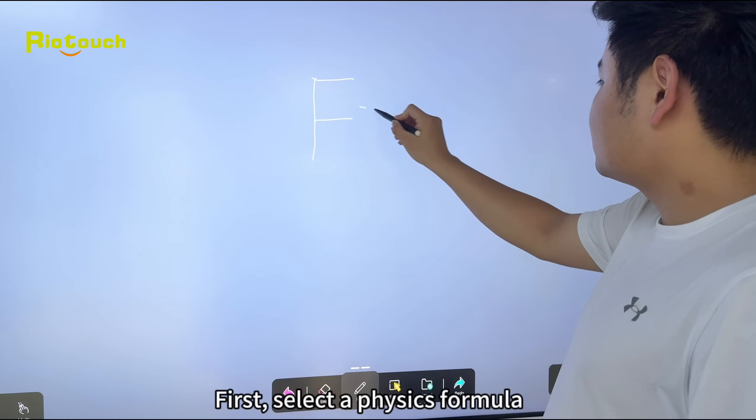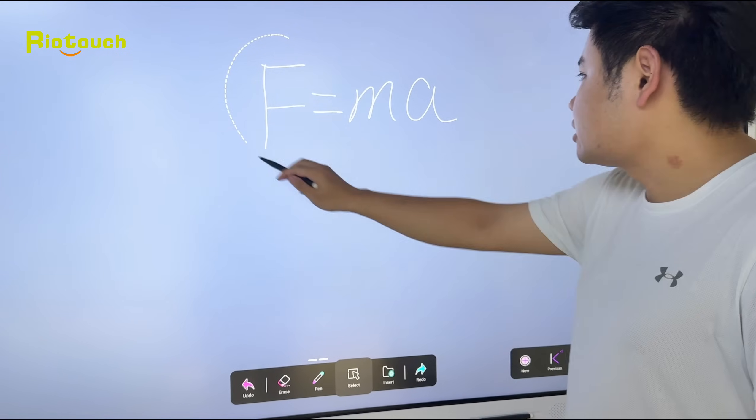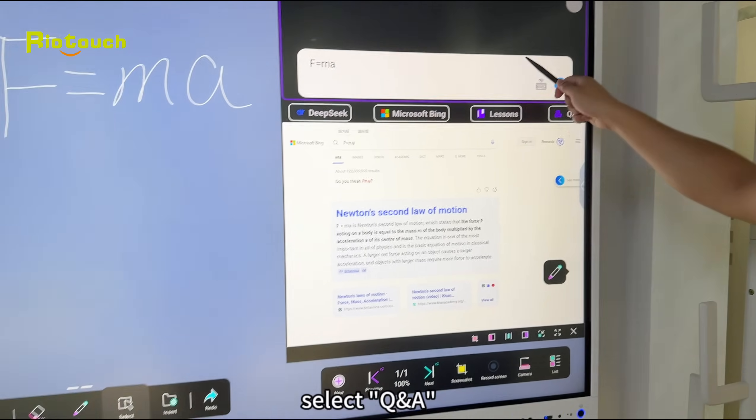First, select a physics formula. After boxing the formula and choosing the AI button, select QA.